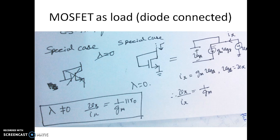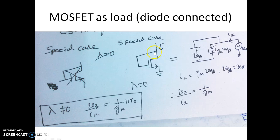There is one special case: the diode-connected MOSFET, where the gate is connected to the drain. If you look from the drain side with gate and drain shorted, this is a short. For lambda = 0, Vx/Ix = 1/gm. For lambda non-zero, it is 1/gm ∥ R0. If the gate is not shorted to drain, it is infinity (lambda=0) or R0 (lambda≠0). If gate and drain are shorted, it is 1/gm or 1/gm ∥ R0.